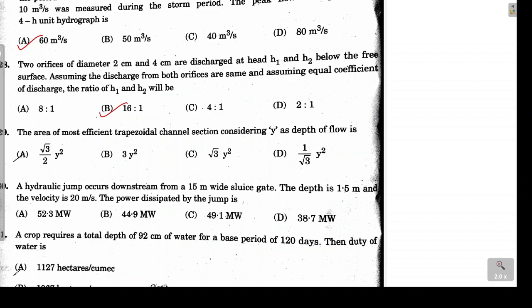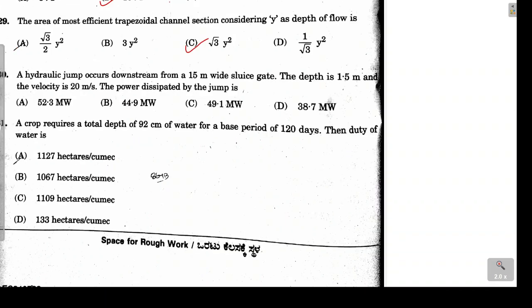Question 29 asks for the area of the most efficient trapezoidal channel section with depth y. The correct answer is option C: area = √3 × y².